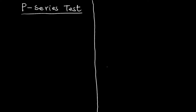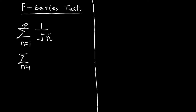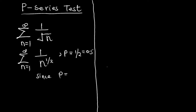Next example: summation n equals 1 to infinity of 1 over the square root of n. Note that 1 over the square root of n can be rewritten as n to the power one-half. Comparing to the general form, p equals one-half, which equals 0.5. Since 0.5 is less than 1, the series diverges.